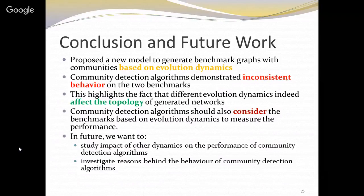We want to extend this strategy to incorporate all the dynamics of the community detection algorithm. We considered only two dynamics — preferential attachment and triadic closure — but there are further dynamics available in the literature for generating networks with communities. Another direction for future work is to use these benchmarks with different evolution dynamics to investigate the reasons behind the different behavior of community detection algorithms.